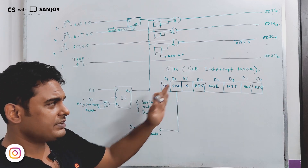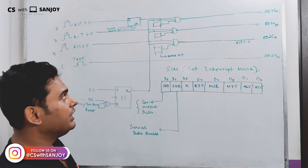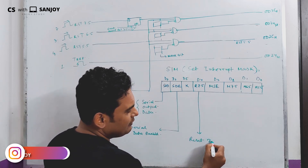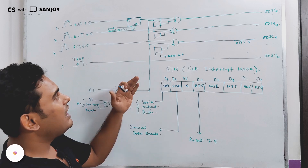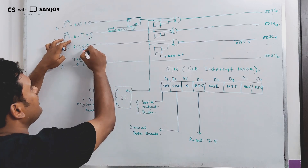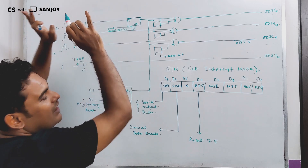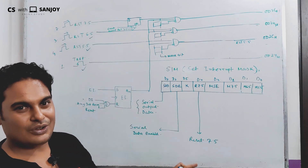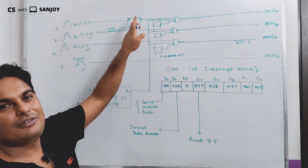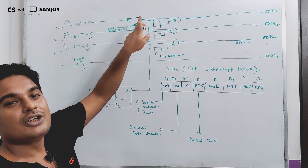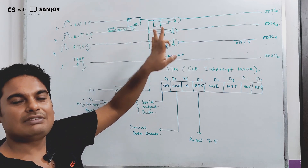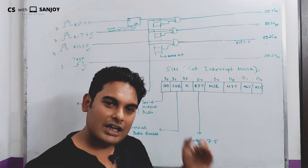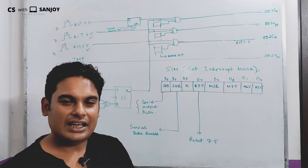D5 is called Reset 7.5. This bit is used to reset RST 7.5 — only RST 7.5 can be reset using this bit, and no other hardware interrupt signal reset.